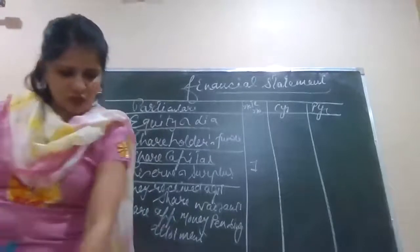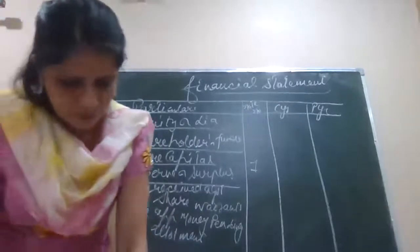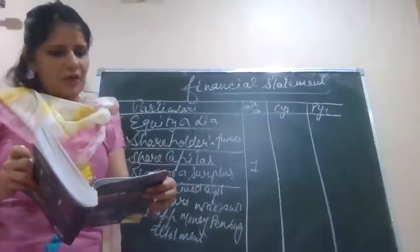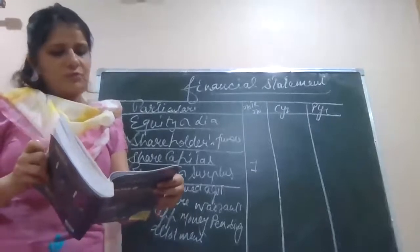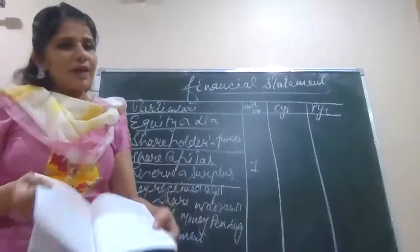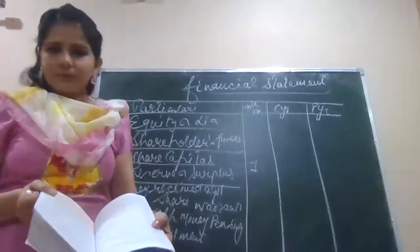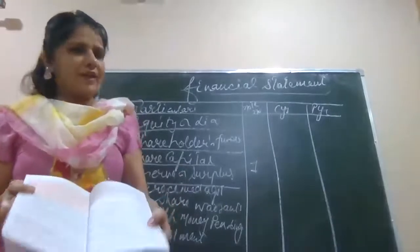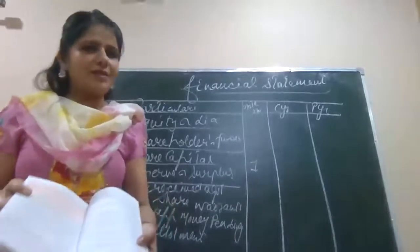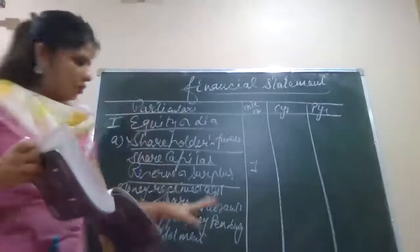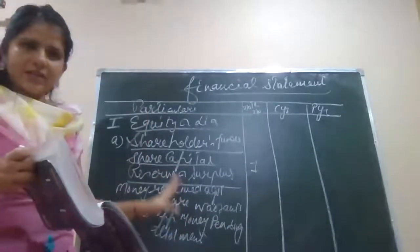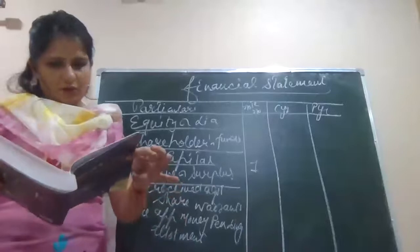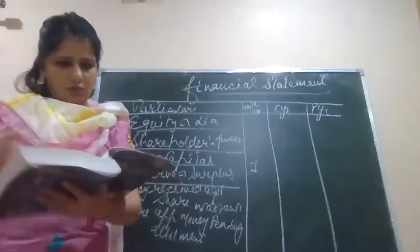Amount received by the company on share application, and against which the company will certainly allot shares, is shown as share application money pending allotment. This situation arises only when application money is received before the balance sheet date and allotment takes time. So till that day you will be showing it as a separate item. This is your application money pending allotment. Now we are proceeding to the next part of our balance sheet.